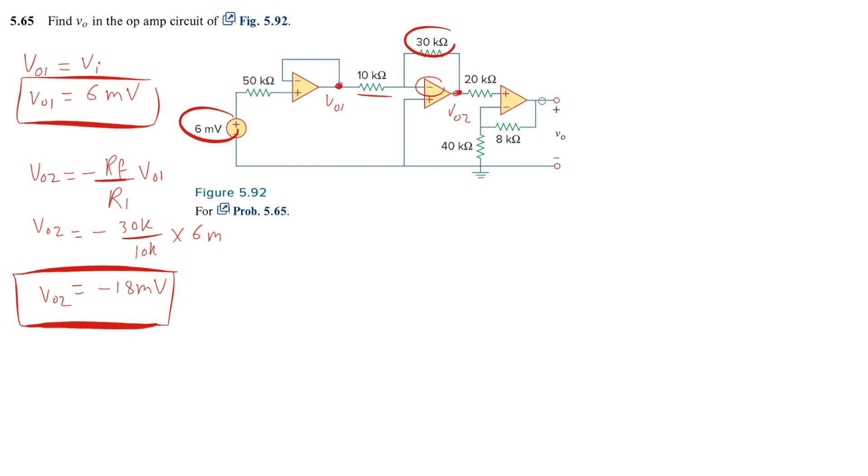Now what is the final output here? V out. This is what type of amplifier? Non inverting. This is the non inverting circuit.